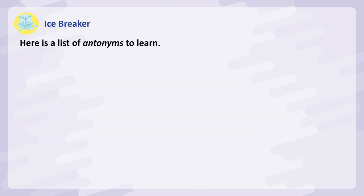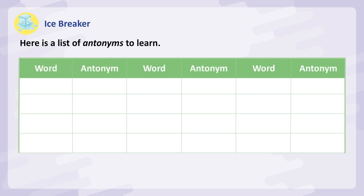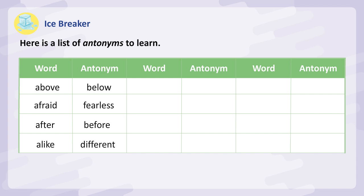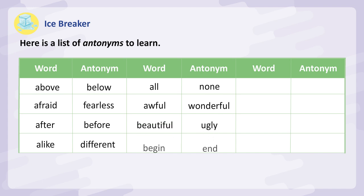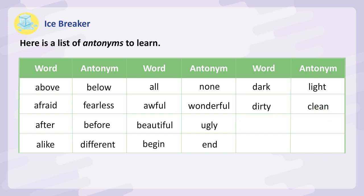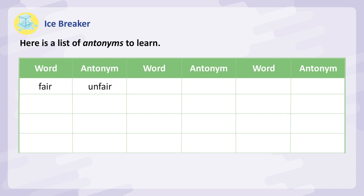Here is a list of antonyms to learn. Above – below. Afraid – fearless. After – before. Alike – different. All – none. Awful – wonderful. Beautiful – ugly. Begin – end. Dark – light. Dirty – clean. Deep – shallow. Easy – difficult. Fair – unfair.